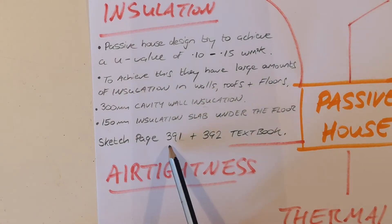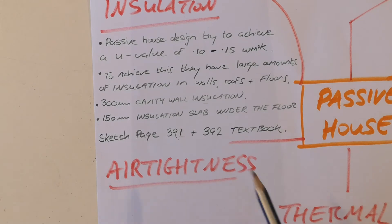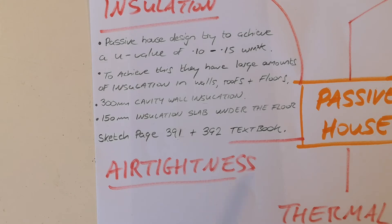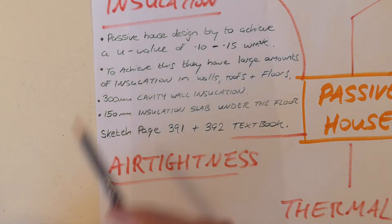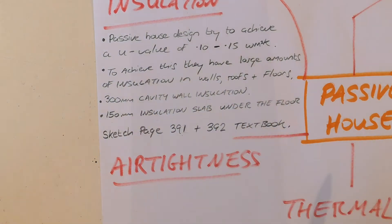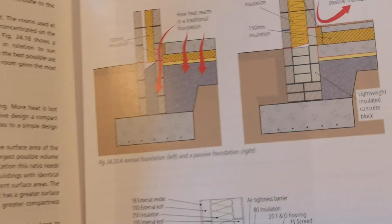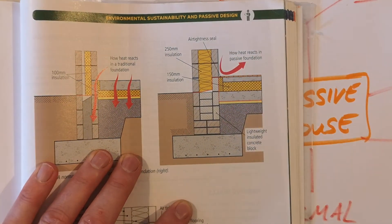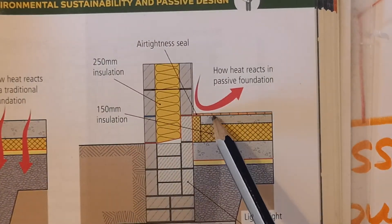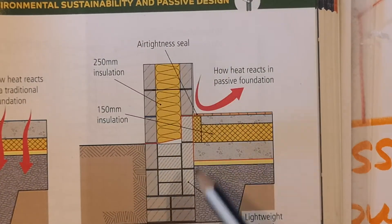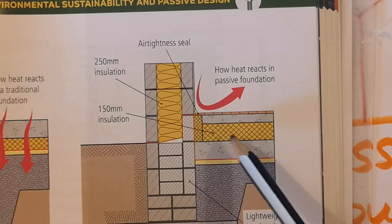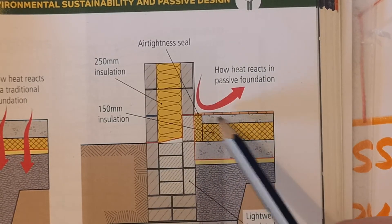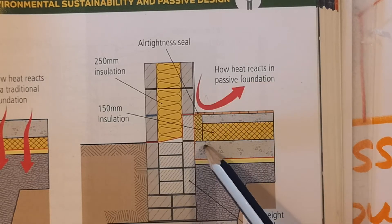There's a sketch on pages 391 and 392 to add to this, because in exam questions they will ask for sketches to go with a couple of the different headings. So two simple sketches on page 391. A simple sketch here of the slab underneath the floor — you wouldn't even have to do the full sketch, just show the slab of insulation underneath the floor.